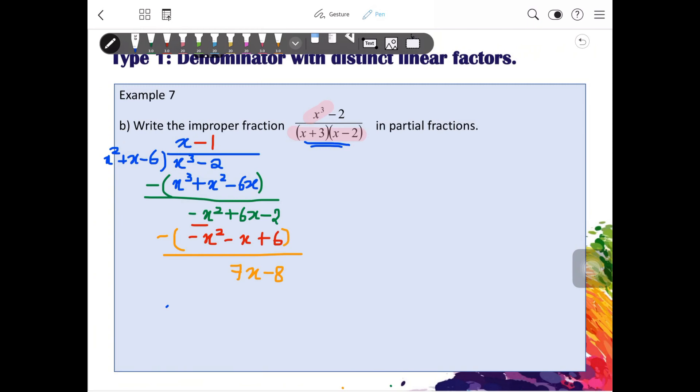So after you do the long division, what you actually have here is x cube minus 2 divided by x plus 3, x minus 2, you will have x minus 1 plus the remainder, 7x minus 8, over the divisor. So we have learned this in the video where we learned about divisors.